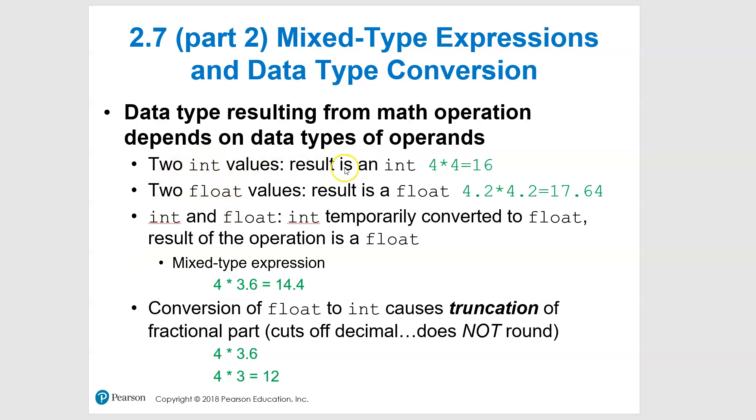If you use two ints in an expression, something that you're writing out like this, the result is going to be an int. Same thing with the float—if you have two floats, the result is a float. So just like this, 4.2 times 4.2. I guess I could have used different numbers; I just realized I used the same numbers for both, but anyway.